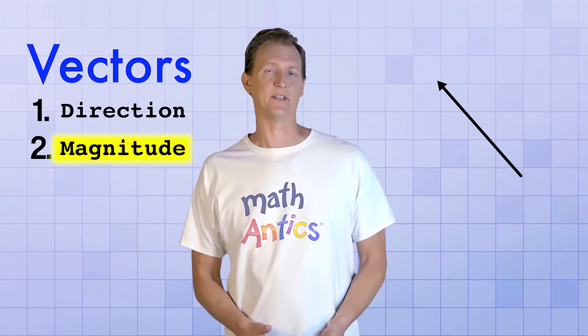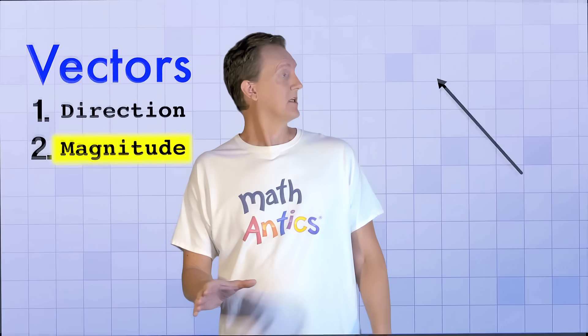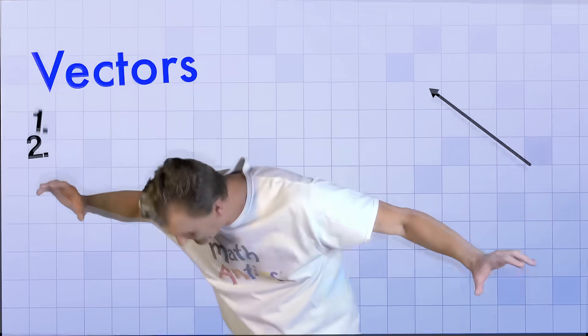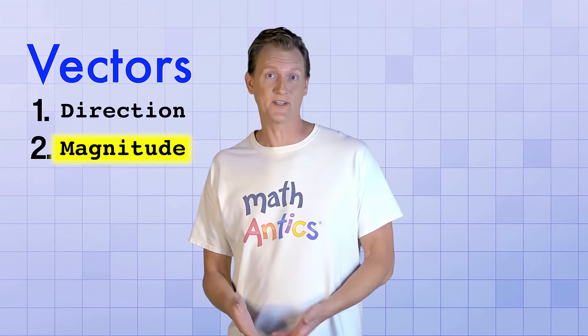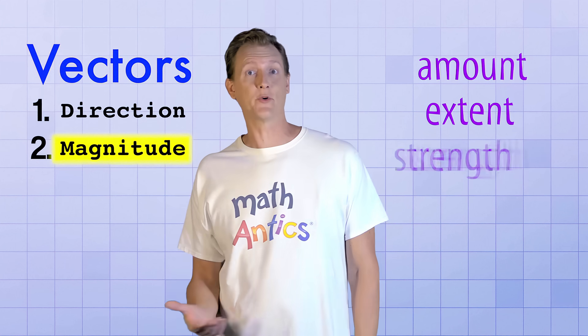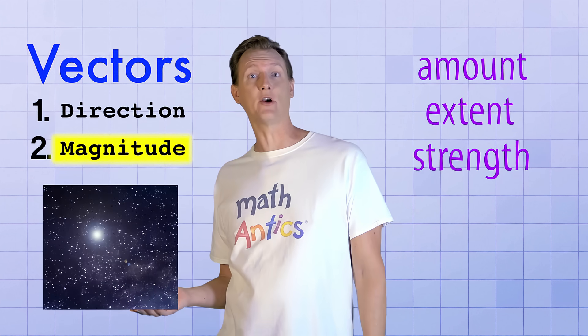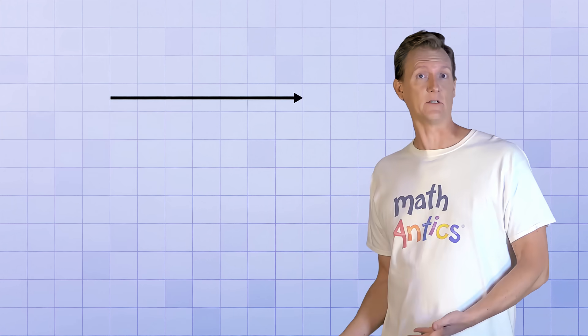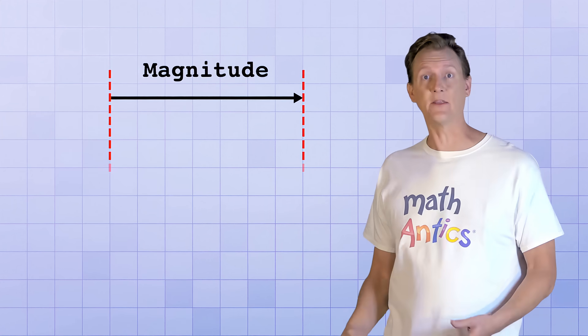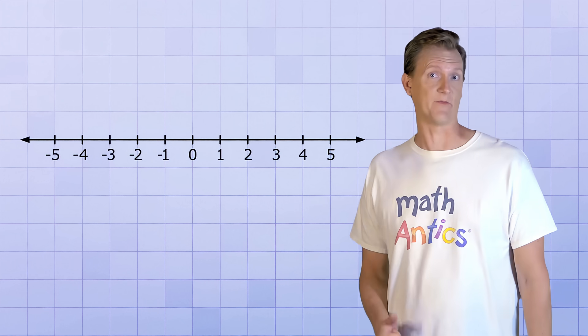But what does magnitude mean? Well, that word might make you think of an earthquake. Whew. Actually, magnitude is just a fancy word for the amount, extent, or strength of something. Like how strong an earthquake is, or how bright a star is, or how heavy an object is. In the case of a vector, you can think of magnitude as being the length of the arrow. To see what I mean, let's use the number line to measure some vectors.